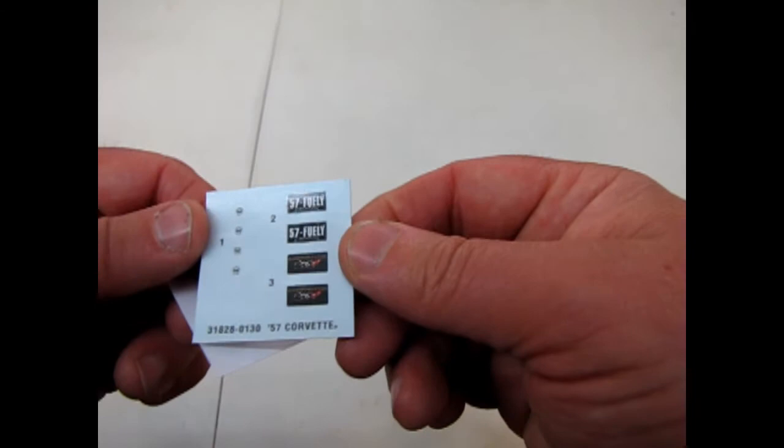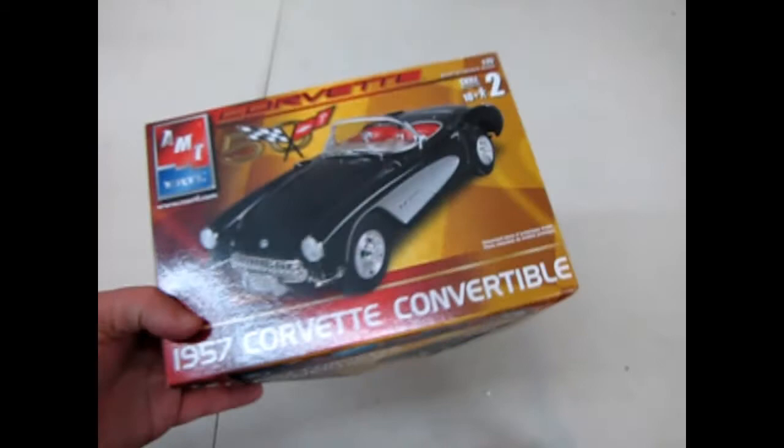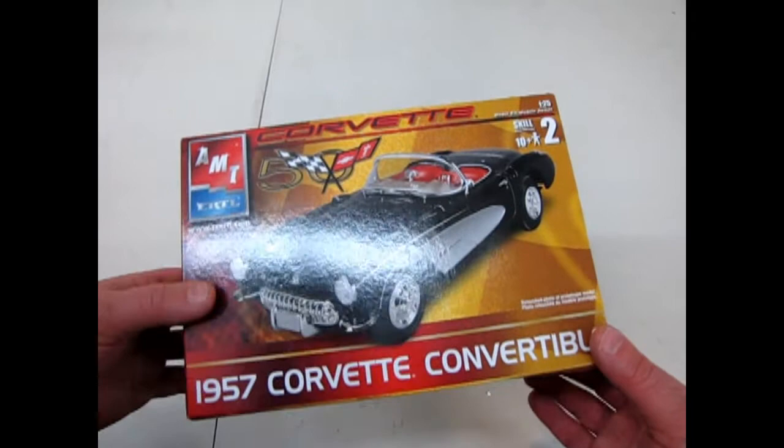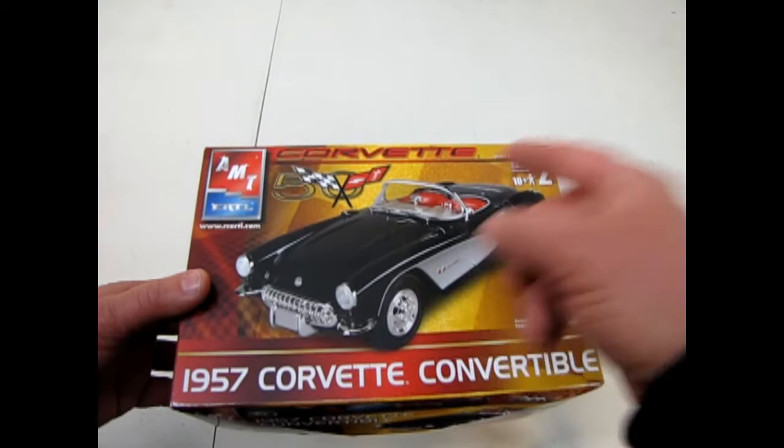Then there's the decals that come with it. A couple little Corvette ones. '57 Fueli and the 50th Anniversary decal. And that brings us to the end of our review for the '57 Corvette convertible. And keep in mind that all cars, the original 1950 Corvette was white, Polo white with a red interior. So if you want to continue that like I once did, paint your car white, red interior. Very cool.